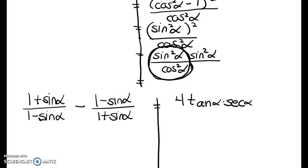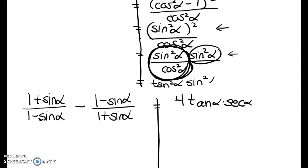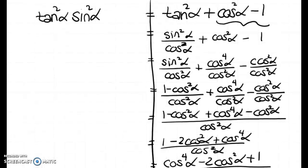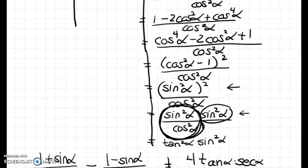This is a continuation of my last video — we weren't quite done with the previous proof. So if you remember, we were at this point, and instead of saying sine to the fourth, I wrote out sine squared times sine squared and grouped sine squared over cosine squared. I was left with just a sine squared, and sine over cosine is tangent. So this is tangent squared alpha times sine squared alpha, which is exactly what we were supposed to prove on this side. So this is where I'll draw my line all the way down.